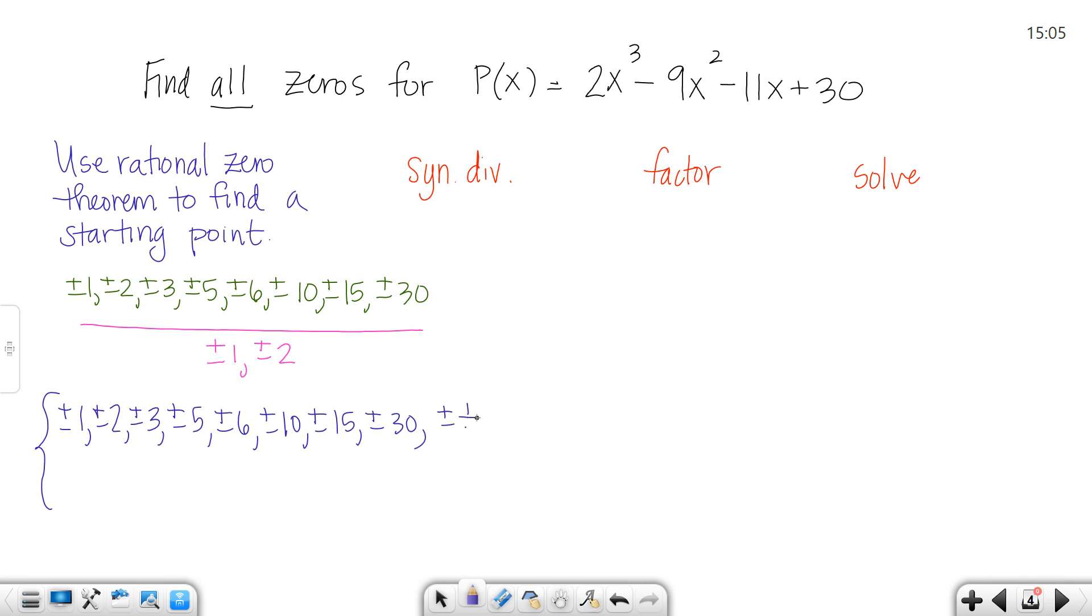You'd also have ±1/2, but 2/2 = 1 which is already in our list, ±3/2, ±5/2, but 6/2 = 3 is already in our list, 10/2 = 5 is already in our list, ±15/2, and 30/2 = 15 is already in our list. So this is our list of candidates. When I get ready to solve this, I'm going to pick a number and try it.